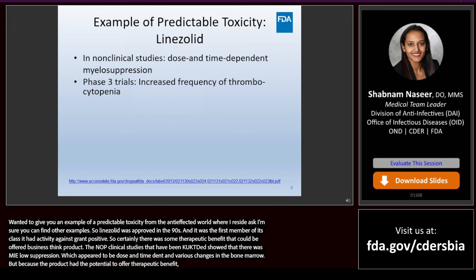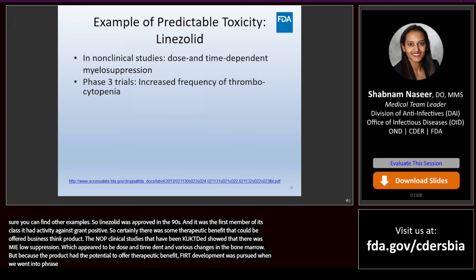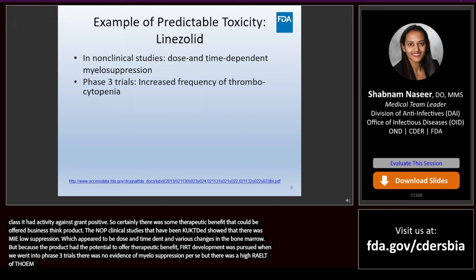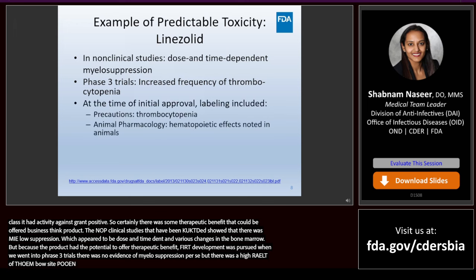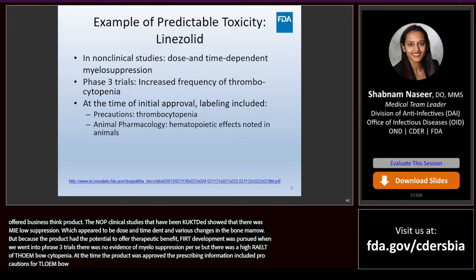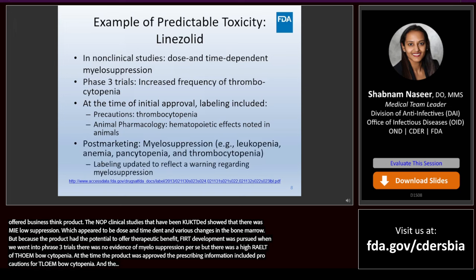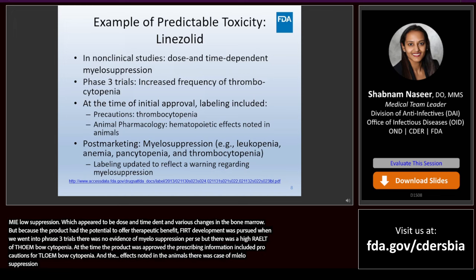When they went into Phase III trials, there was no evidence of myelosuppression per se, but there was a high rate of thrombocytopenia seen in patients treated with linezolid. At the time the product was approved, the prescribing information included precautions for thrombocytopenia and the animal pharmacology sections described the hematopoietic effects noted in the animals. After the product was approved, cases of myelosuppression affecting all three cell lines were reported — leukopenia, anemia, pancytopenia, and thrombocytopenia — so the labeling was updated to include a warning against myelosuppression. This was an example of a predictable toxicity.